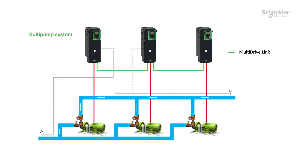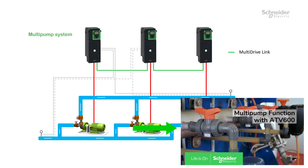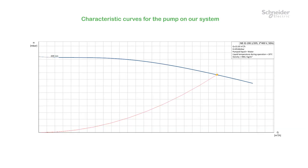In the following example, we will use a multi-pump system. On our system, we have a global flow meter and we want to estimate the flow rate on each pump. Please refer to FAQ000242058 to configure the multi-pump function. We will use the head versus flow curve because we measure the pump's head using the inlet-outlet sensors installed on the pump during commissioning.